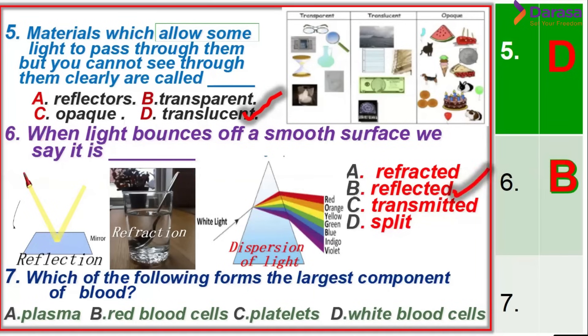Question 7: Which of the following forms the largest component of blood? The choices are plasma, red blood cells, platelets, and white blood cells. The correct answer is plasma — plasma forms the largest component of blood.